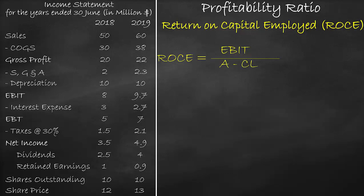If you remember our accounting formula, it is assets equals liabilities plus shareholders' equity. We can divide liabilities into short-term liabilities, which are called current liabilities, and long-term liabilities, which are called non-current liabilities. Therefore, we can rewrite our balance sheet formula as: assets equal to current liabilities plus long-term liabilities plus shareholders' equity.